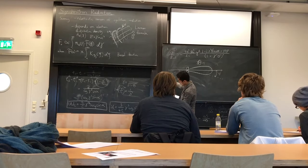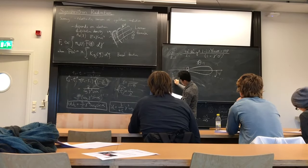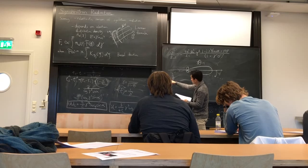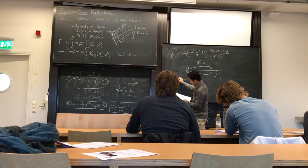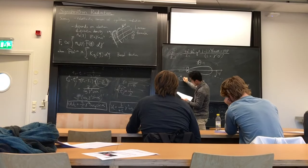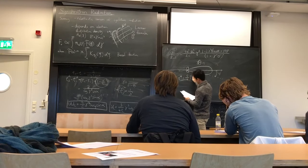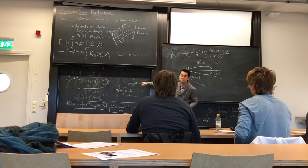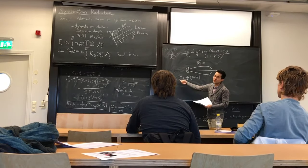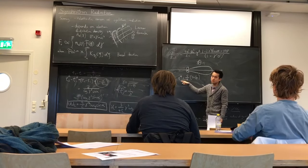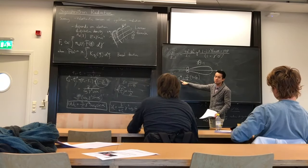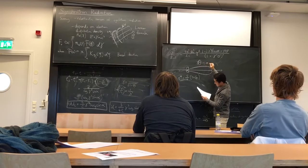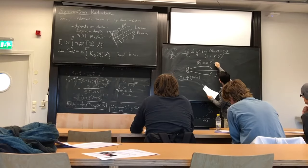By simple geometry — radius times angle gives arc length — and using the arrival time relation, we get that this quantity is proportional to gamma cubed times omega_g times t_arrival times sine alpha. This is proportional to omega_c, the characteristic frequency we defined. The reason we add the factor of 3/2 is for simplicity in integration.